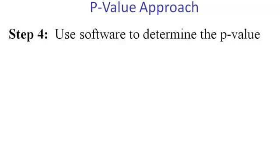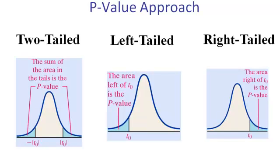Now in step four we get the p-value from our software. The p-value is a probability and it's represented by the area under the curve of the t distribution out on the tails of the distribution.